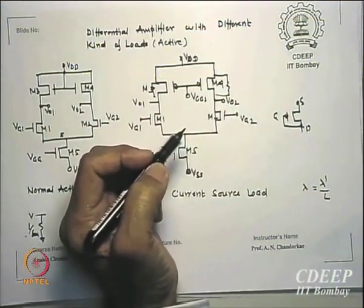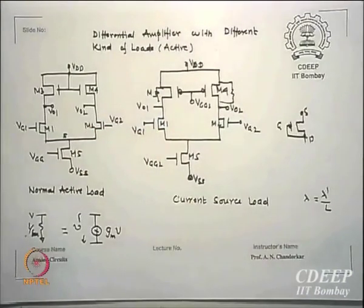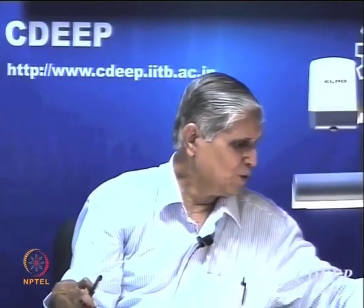Before finishing the amplifier section: in real life, op-amps are still made on bipolar technology. The famous 741 op-amp is bipolar. Bipolar op-amps have higher gm for equivalent bias conditions compared to MOSFET, making bipolar amplifiers superior in gain performance. However, the cost is higher power dissipation.